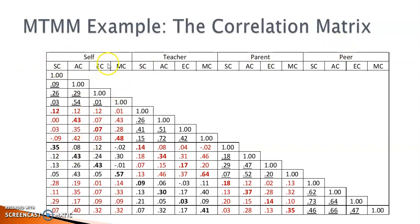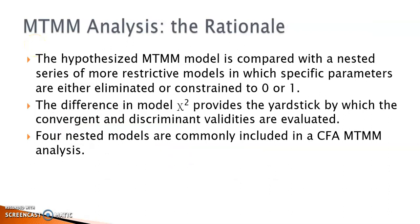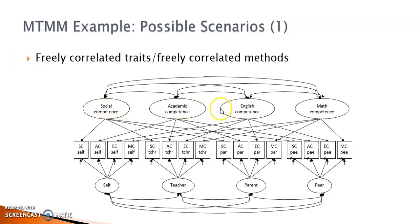The expectation when eyeballing the matrix is to see relatively high correlations between measures of the same construct from different sources. The lowest correlations should be among measures of different constructs from the same source, and also among measures of different constructs from different sources. In the MTMM analysis, we build four nested models and evaluate convergent and discriminant validities by checking their differences in model chi-square values. In our example, the four traits are the four constructs and the four data sources are the four measurement methods.